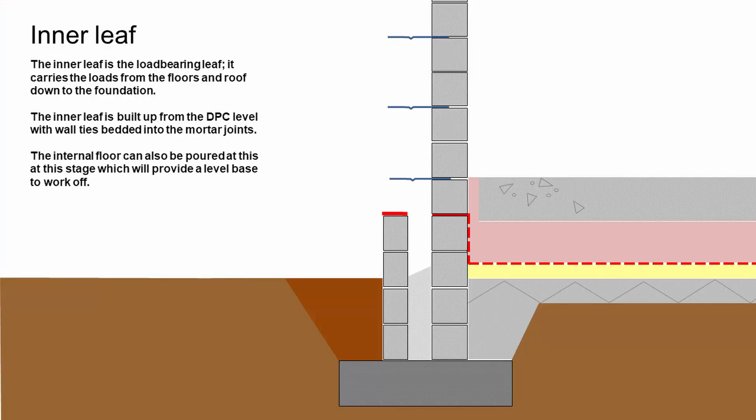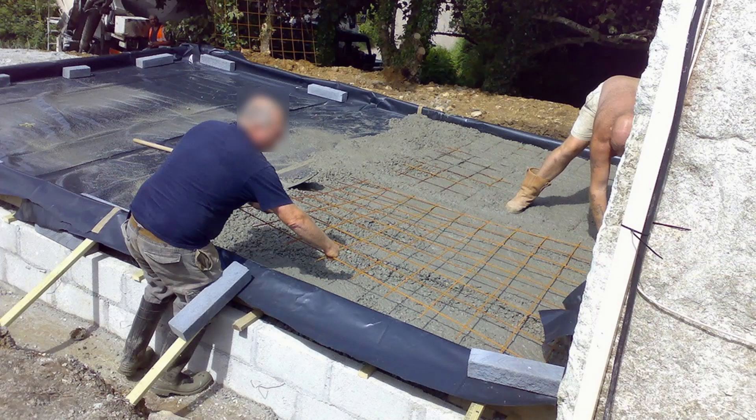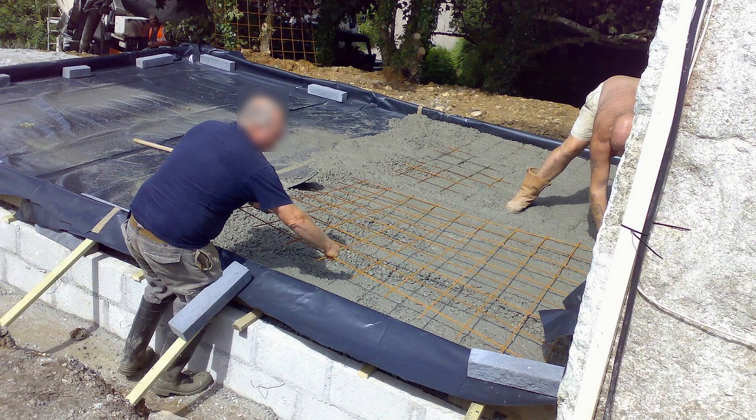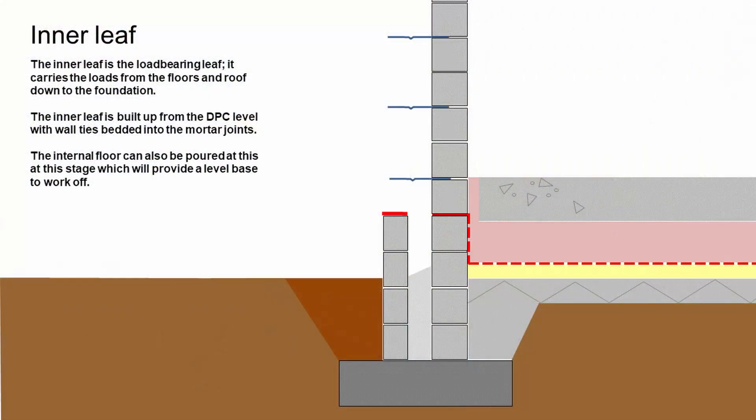Once we've got our damp proofing done, first of all we can install our floor inside. We can pour a floor on top of insulation. But more importantly, we can install our inner leaf. It's unlikely you'd actually install the full height of the inner leaf at this point, but this is just for illustration.